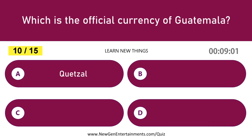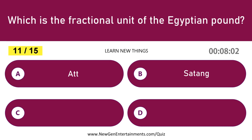Which is the official currency of Guatemala? Quetzal. Which is the fractional unit of the Egyptian pound? Piastre.